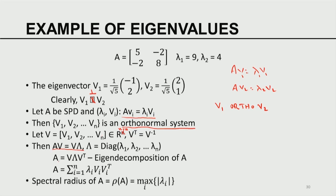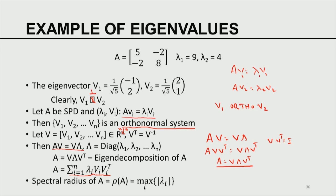Since V^T equals V^{-1}, we can multiply both sides of AV = V*Lambda on the right by V^T, giving A = V * Lambda * V^T. This is called the eigen decomposition of A. In element form, A can be expressed as the sum of outer products: A = sum of lambda_i * v_i * v_i^T. Each term v_i * v_i^T is a rank-1 matrix weighted by lambda_i, so A can be expressed as the weighted sum of rank-1 matrices, each corresponding to an eigenvector.